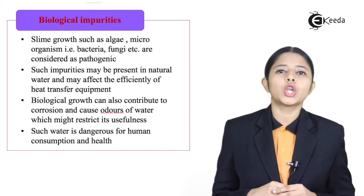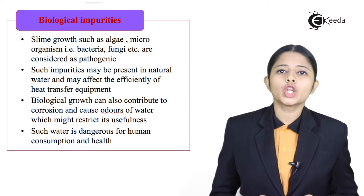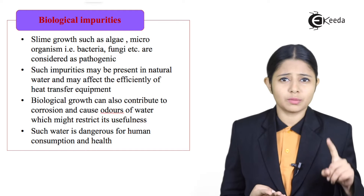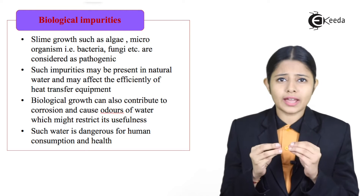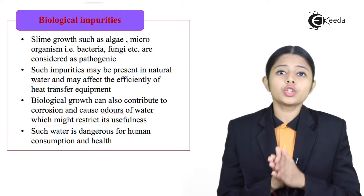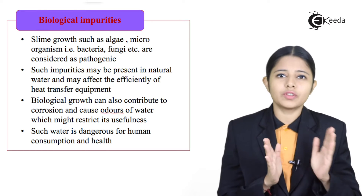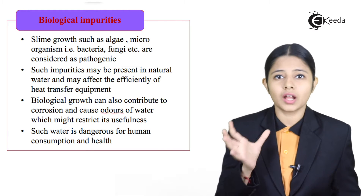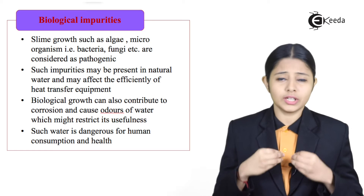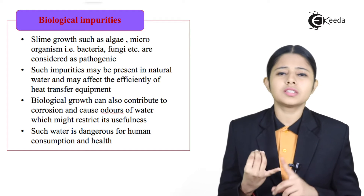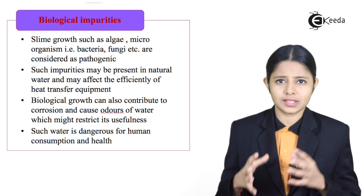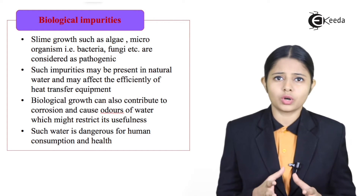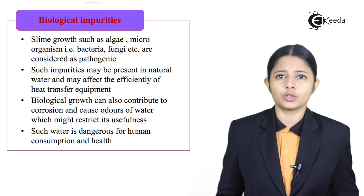The last type of impurity are the biological impurities. Biological impurities contain algae, the growth of slime, all the different kinds of microorganisms, bacteria, and living organisms which grow in water. Most bacteria — around 95% of bacteria growing in water — are harmless to humans, but 5% of bacteria are harmful. Because of these bacteria, if we drink that water, we get diseases like typhoid, cholera, and dysentery. It is very important to filter out all the biological impurities from water before it is potable or given to humans for any kind of use.